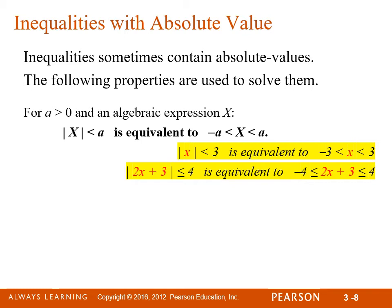For example, the absolute value of 2x plus 3 is less than or equal to 4 is equivalent to 2x plus 3 being between negative 4 and positive 4.